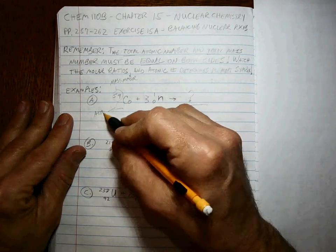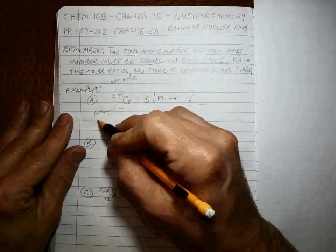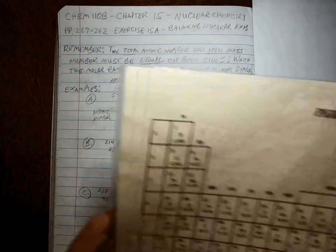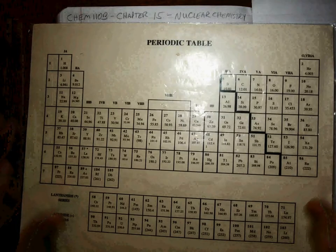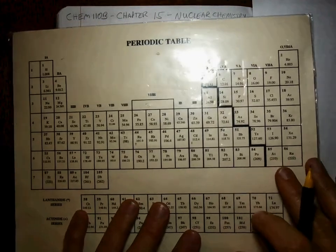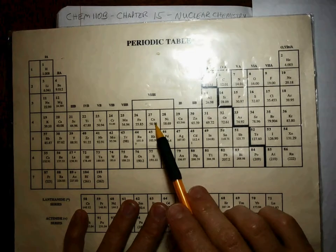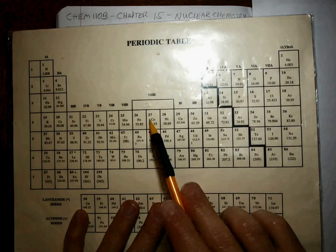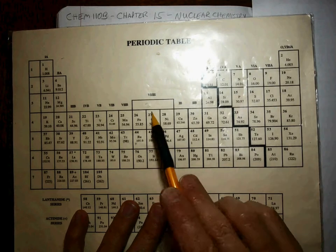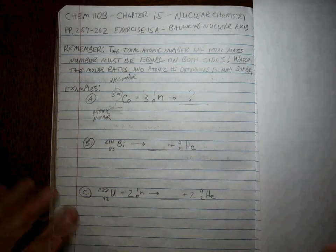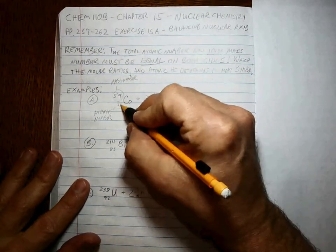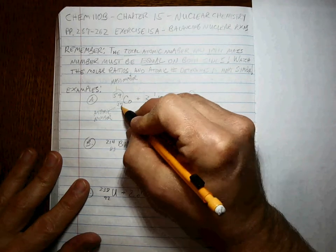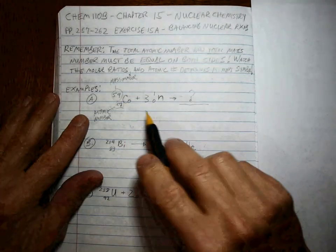It should be easy to tell what cobalt is by looking up cobalt. Cobalt can be found right there, so that means that's element number 27, its number of protons. That's the atomic number. Alright, so we know we can stick in a 27 here. 27 means cobalt, cobalt means 27.